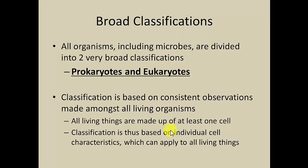All living organisms on earth are made up of at least one cell, and that's one of the things that helps us define a living thing. A lot of microbes have only one cell, but all living things are made up of at least one cell or more. You and I, for example, on average have something like a hundred trillion cells.